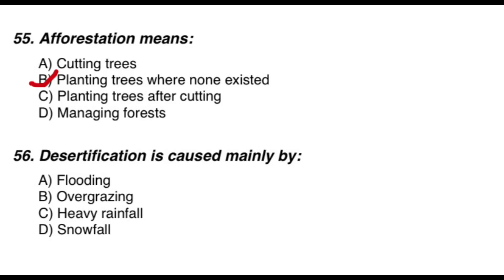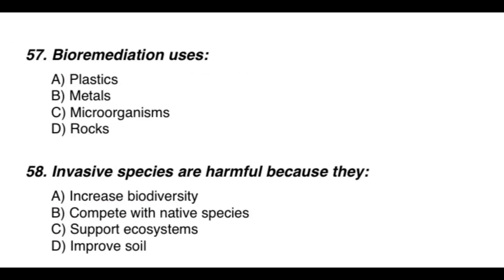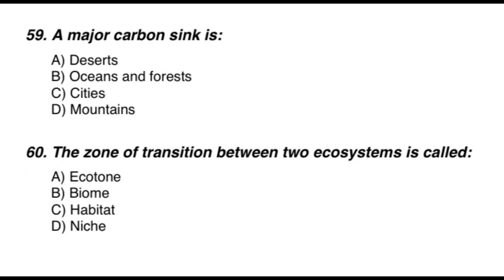Question 56: Desertification is caused mainly by — the correct option is B — overgrazing. Question 57: Bioremediation uses — the correct option is C — microorganisms. Question 58: Invasive species are harmful because they — the correct option is B — compete with native species. Question 59: Major carbon sinks are — the correct option is B — oceans and forests.